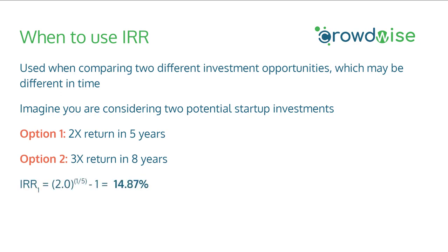Let's calculate the IRR for each. A 2x return multiple raised to the one-fifth power is about a 14.9% return. A 3x return multiple in eight years is about a 14.7% return. In the grand scheme of things for startup investing, the difference in these two numbers is probably within the noise of your best estimates. However, all else being equal, the first option would be a better investment opportunity as you get a slightly higher IRR.